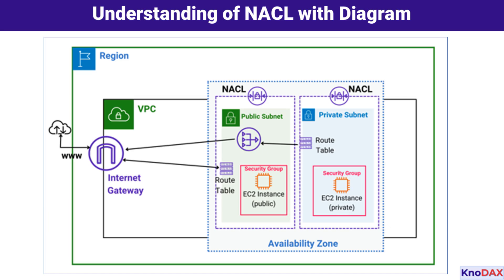Let's understand NACLs using this diagram, which illustrates their role in securing a VPC at the subnet level. We see two subnets: a public subnet and a private subnet, each protected by a NACL. The public subnet contains a web server on an EC2 instance, accessible from the internet via an internet gateway, with a route table directing traffic to the gateway. The private subnet contains a database server on another EC2 instance, isolated from the internet to keep sensitive data secure.